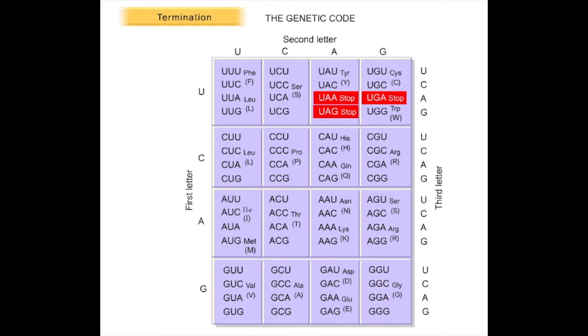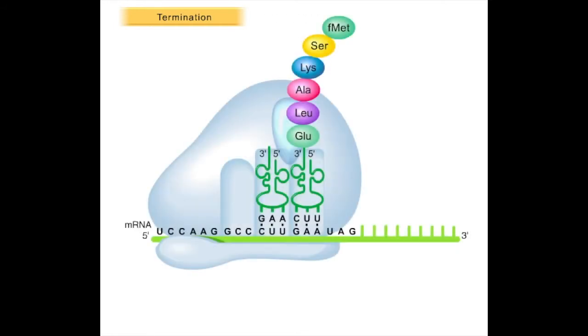Unlike other codons, stop codons do not code for any amino acid, so no normal tRNAs have anticodons that complement these stop codons. The ribosome recognizes polypeptide chain termination with the help of proteins called release factors.